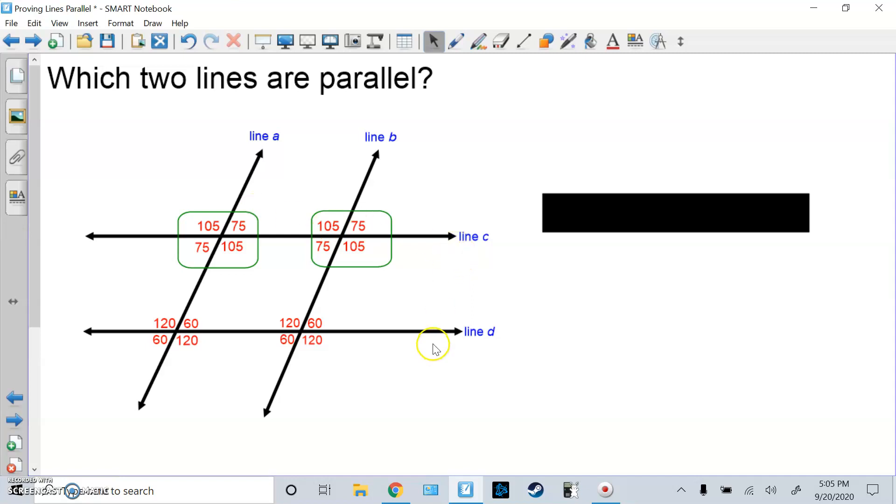Now instead of checking if C is parallel to D, I'm checking if A is parallel to B because line C is the transversal. Ignore line D. 105, 105 top left, top left, corresponding angles are equal. Bottom right, bottom right, 105, 105, corresponding angles are equal. Bottom left, bottom left, 75, 75. Top right, top right, 75. Alternate interior 105, 105, they're equal. Alternate exterior 105, 105. Same side interior adds to 180, 105 plus 75 is 180, that's good.